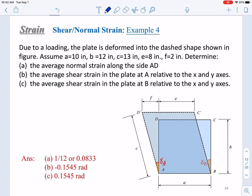Assume A equals 10, B 12, C 13, E 8, and F 2 inches. Then determine: (a) the average normal strain along the side AD, (b) the average shear strain in the plate at point A, and (c) average shear strain in plate at B. These are three equations. Let's just try to solve them one by one. You can just use the equations to define normal and shear strains for the calculations.